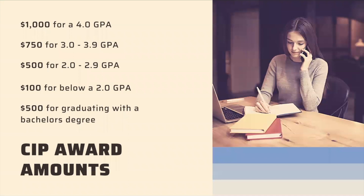The CIP award amounts will vary depending on what your GPA was for that semester. You will receive $1,000 for a 4.0 GPA, a $750 award for a 3.0 to 3.9 GPA, $500 for a 2.0 to 2.9 GPA, and $100 for below a 2.0 GPA. If you are graduating within that semester, you will receive an additional $500. So if you are graduating with a 2.5 GPA, you will receive $1,000 in total for the CIP award.